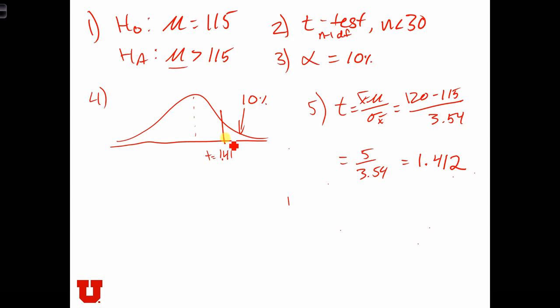So our t-score is just past the critical value, which means we're going to reject the null hypothesis. Reject the null, and the average IQ in the class is probably greater than 115.